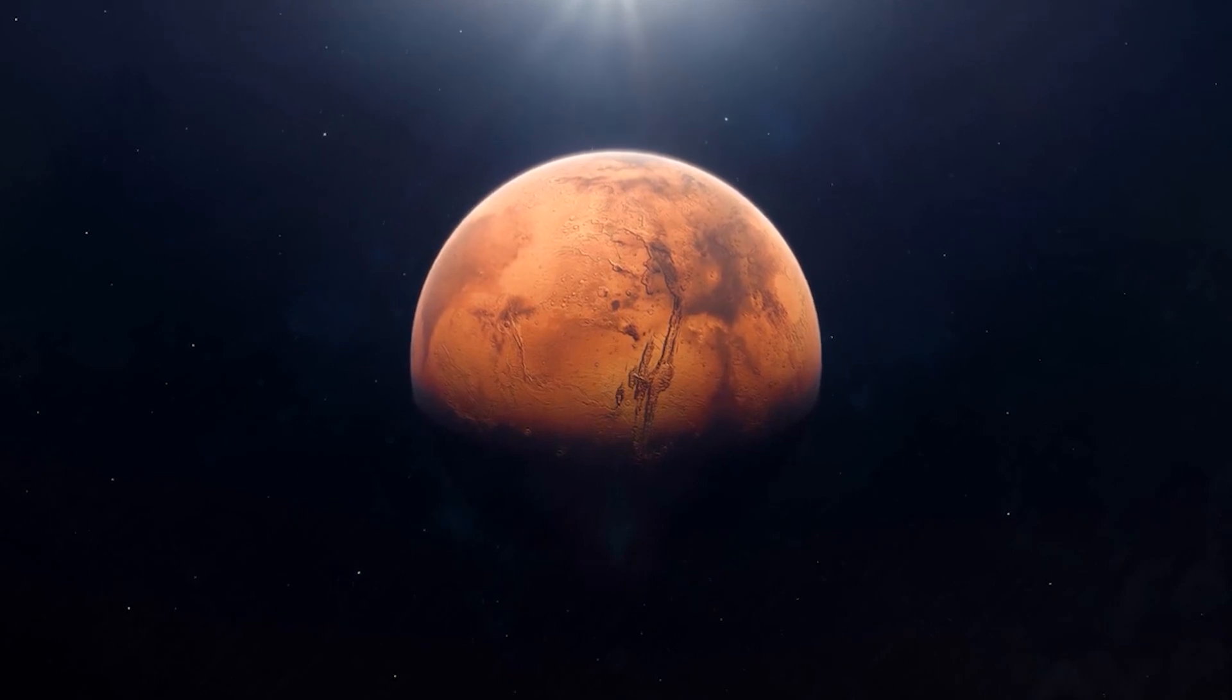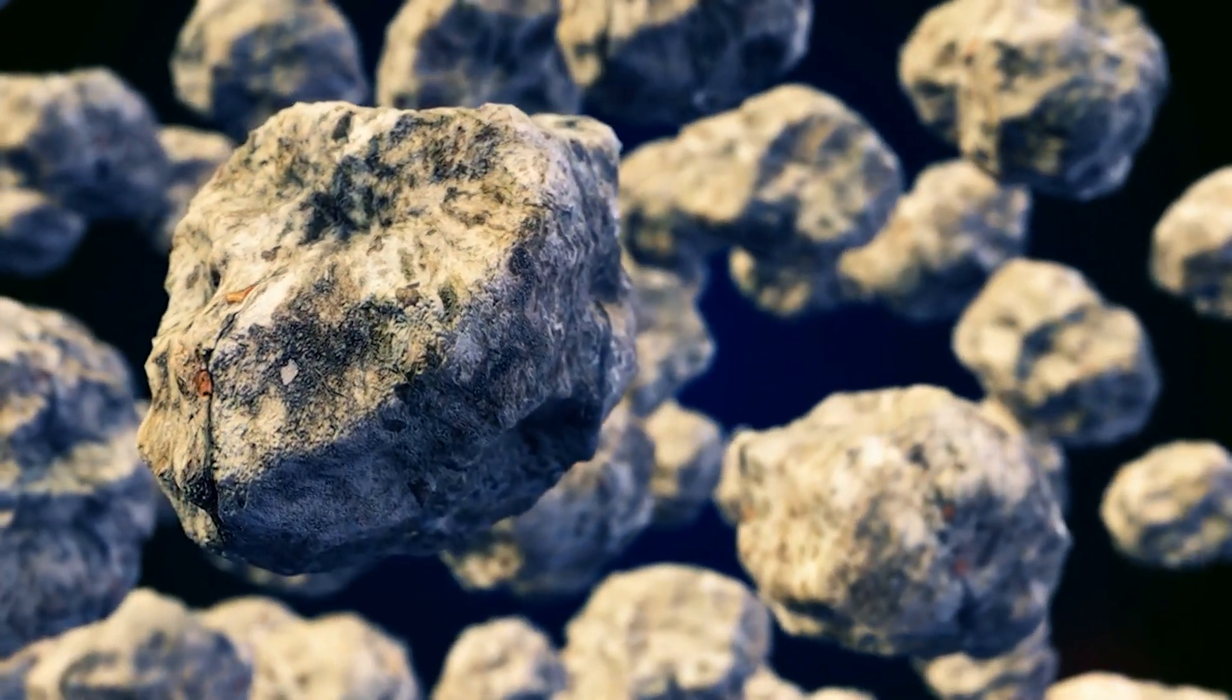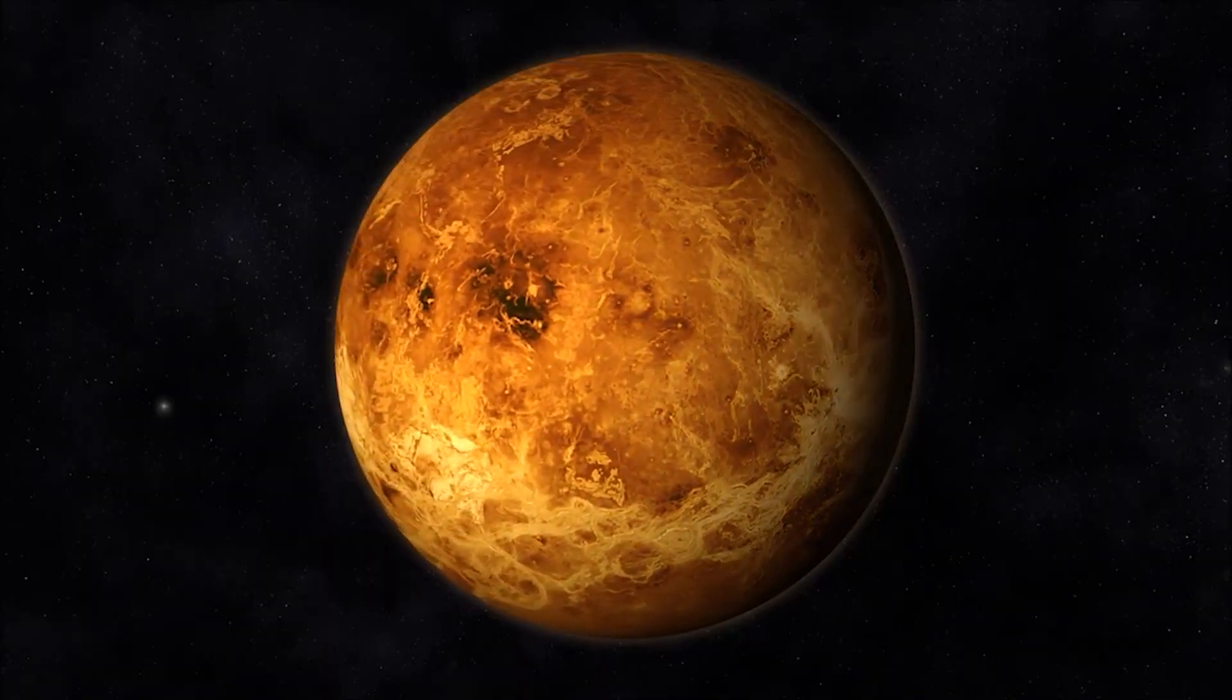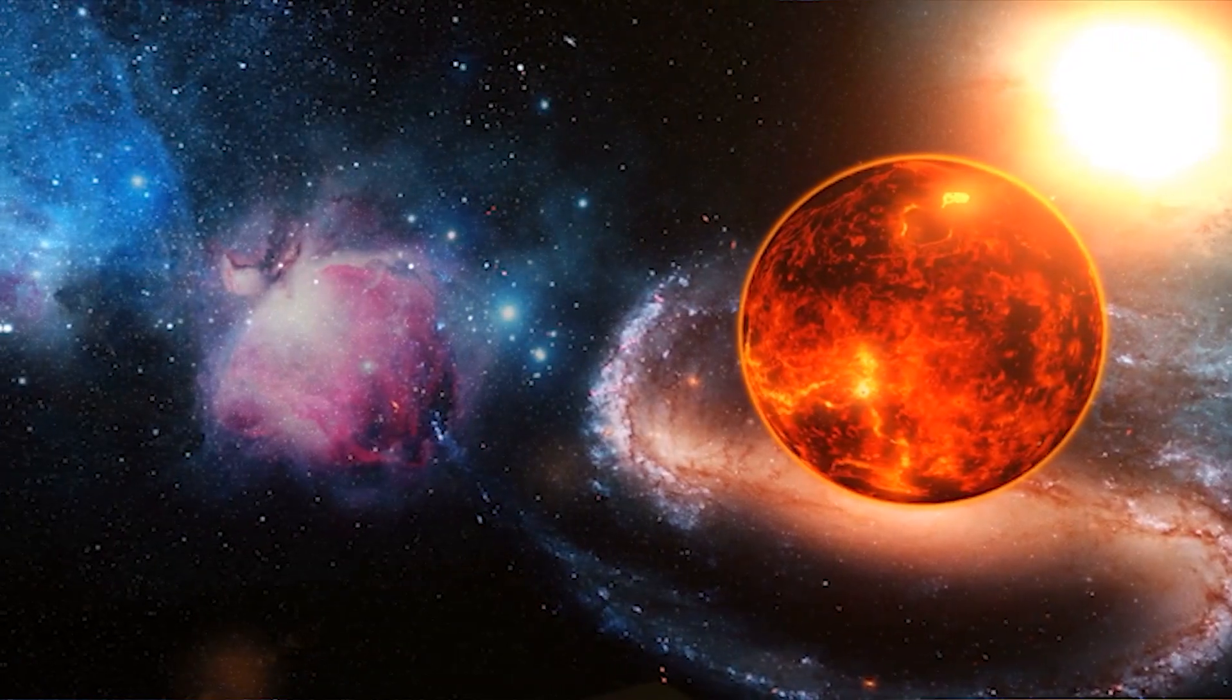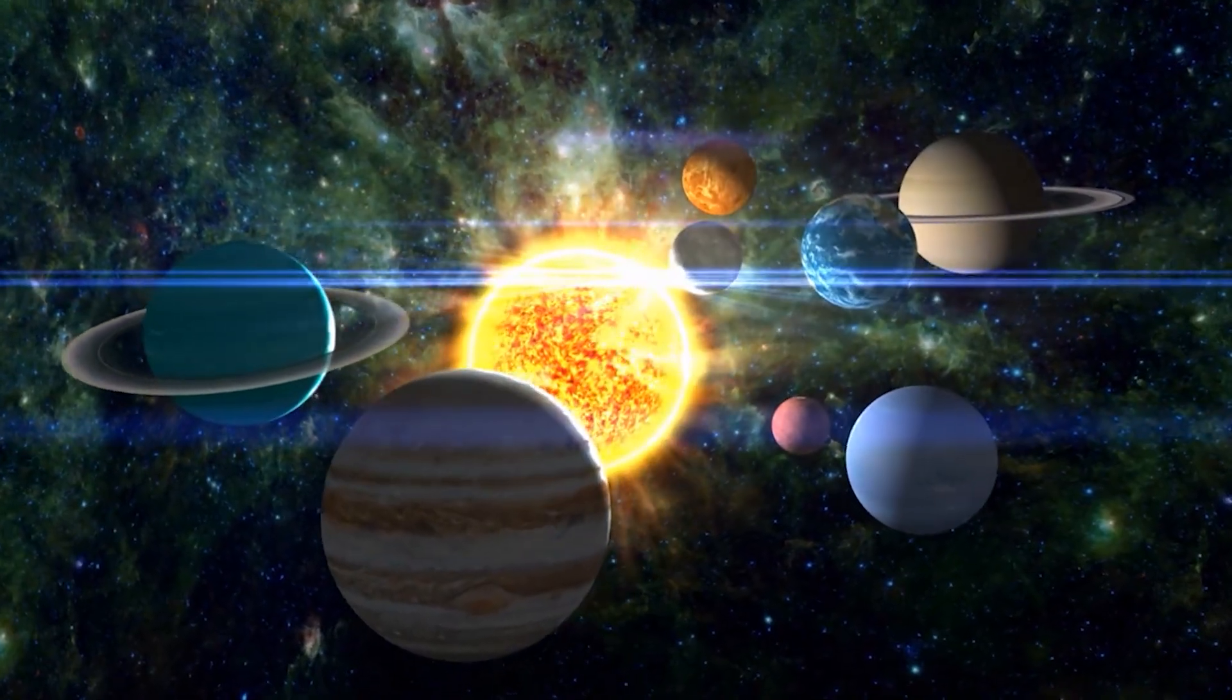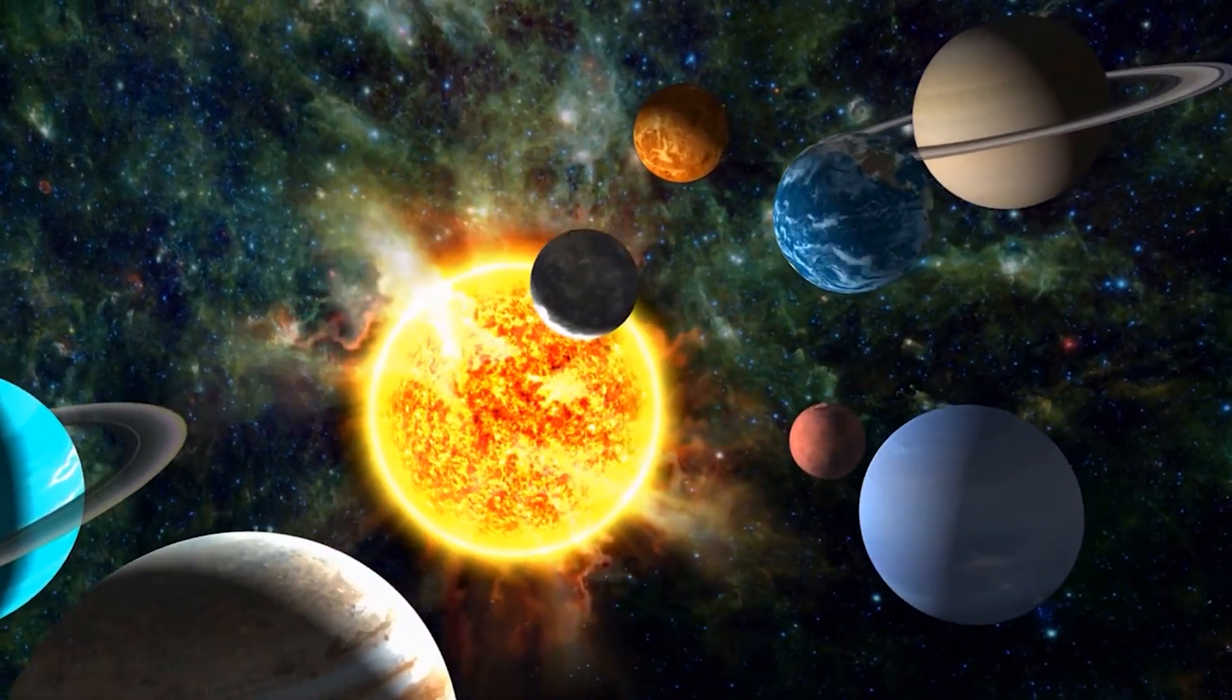If Mars disappeared, it would also be goodbye to those annoying asteroids it's constantly flinging towards Earth and nothing more. Even if our sister planet Venus disappeared on us, we would only miss its shine and nothing more. This is because none of these planets can significantly alter the solar system's gravity and cannot harm us.